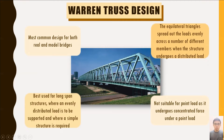Our group has chosen the Warren truss design because it is the most common design for both real and model bridges. It is most easily identified by its use of equilateral angles. Besides, we can save on the cost of materials because less material is required for the construction of a Warren truss bridge. Unlike forming a square, which requires four parts to be joined, a triangle in a Warren truss only requires three parts.